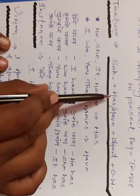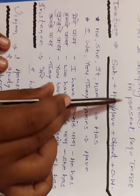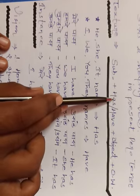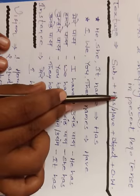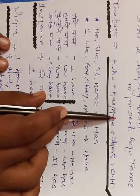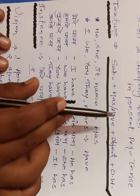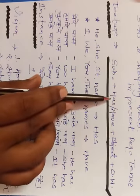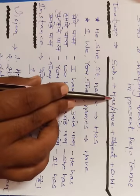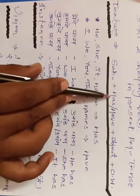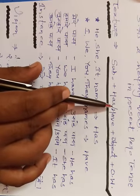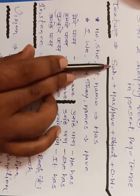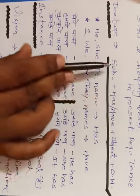Has aur have apne se nahi aa jaate — subject decide karta hai. Ab subject decide kaise karega? Subjects ko agar hum do bhaagon mein baant dein: singular subject aur plural subject. Singular subject mein kaun kaun aate hain? He, she, it — aur name of one single person, single place, single things. Kisi ek vyakti, vastu, sthaan ka naam — aapka singular subject kehlaata hai. Toh dhyaan rakhna: jab kabhi he, she, it ya kisi name ke saath hum kiska use karenge? Has ka use.